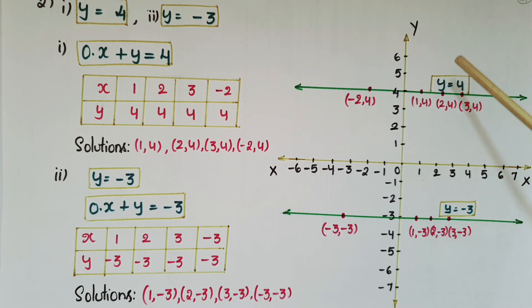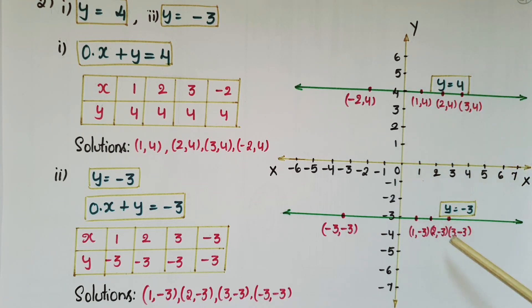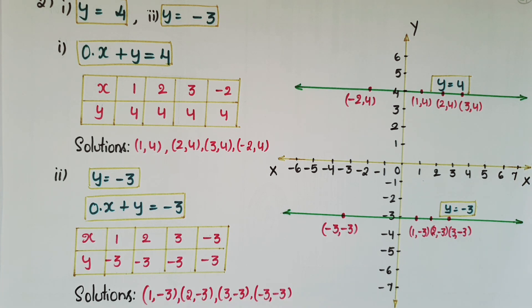So y = 4 is above the x-axis and y = -3 is below the x-axis; both are parallel to the x-axis.